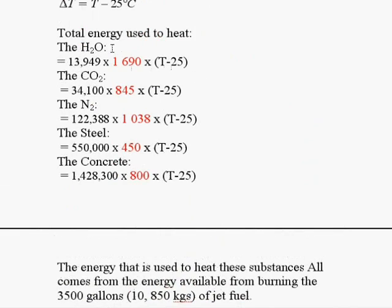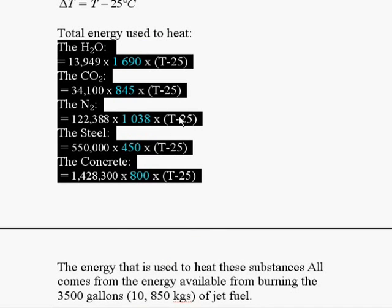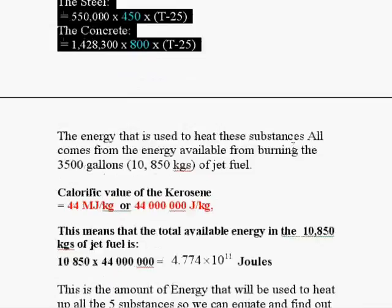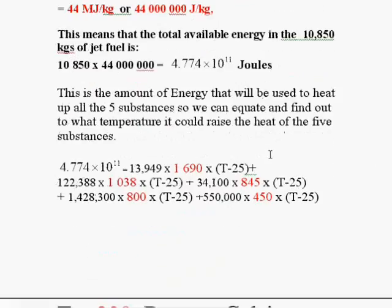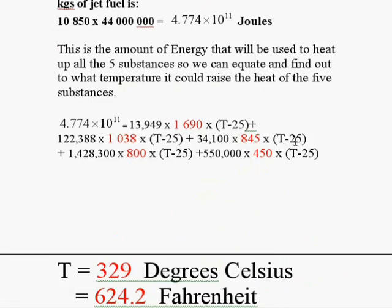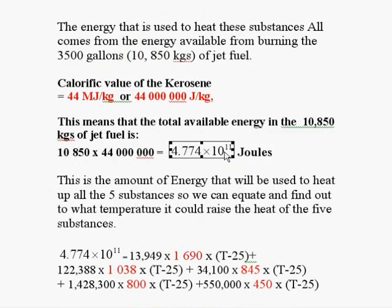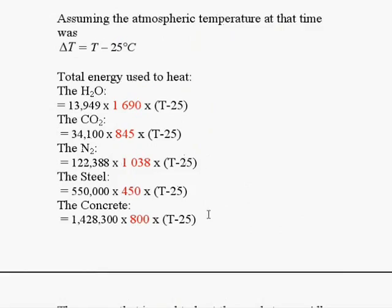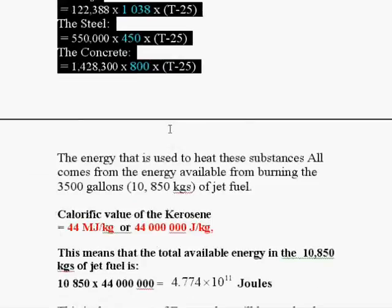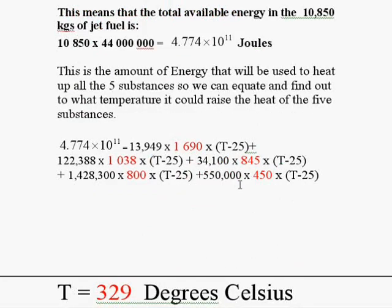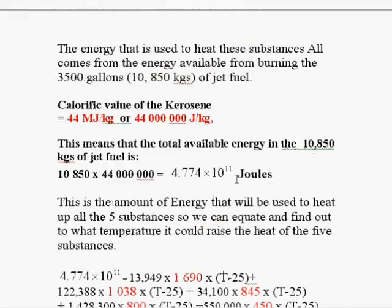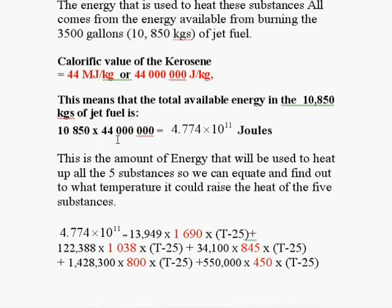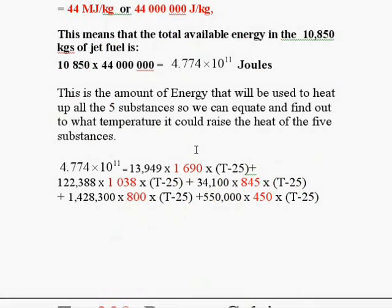And here, we have the total energy that is needed to heat up all of these substances to T degrees Celsius. So, now, we can equate this, 4.774 times 10 to the 11, with these, and solve T. And that will give us the total energy, and that will give us the temperature that it could be raised, having in mind that the source of the energy is the energy available in the jet fuel.